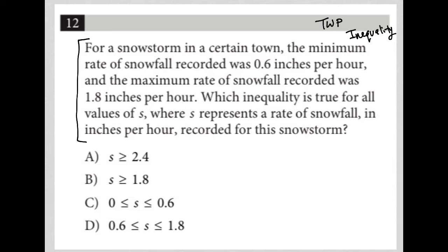The question says for a snowstorm in a certain town, the minimum rate of snowfall recorded was 0.6 inches per hour, and the maximum rate of snowfall recorded was 1.8 inches per hour.